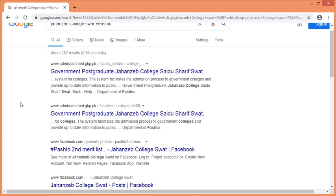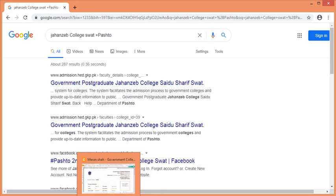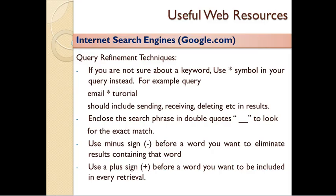This is a good example: 'Jehanzeb College SWAT + BASHTO'. This is a good example of query refinement, which is done one by one. This is a good example of exploring and using refinement techniques. These are the techniques that can be used for research.